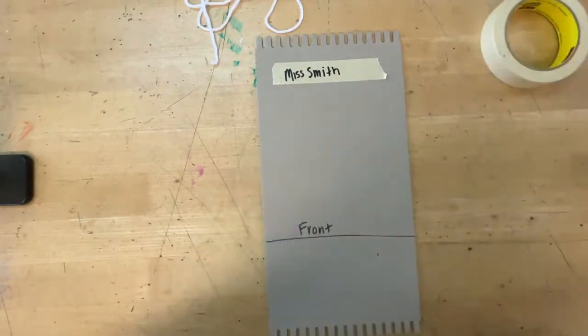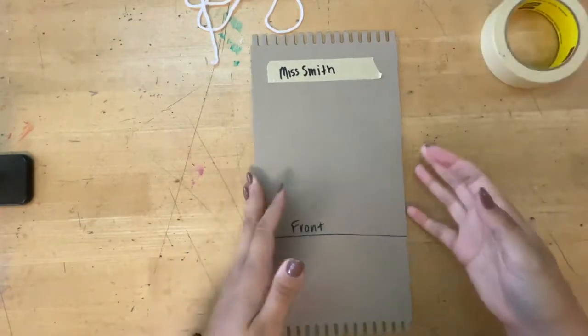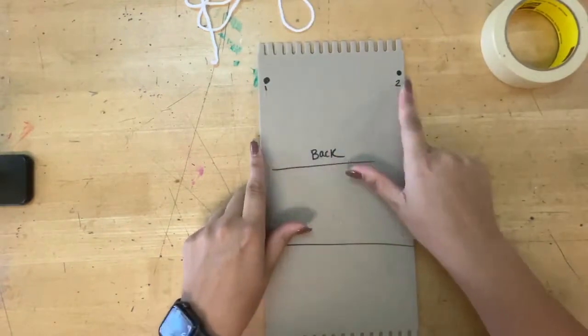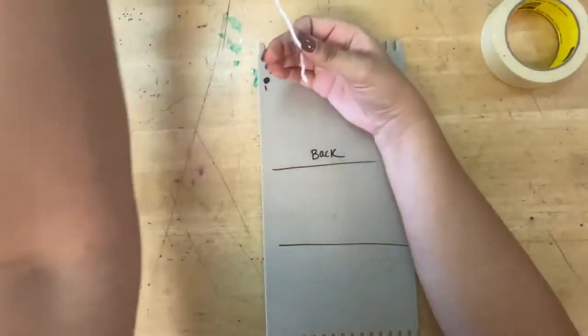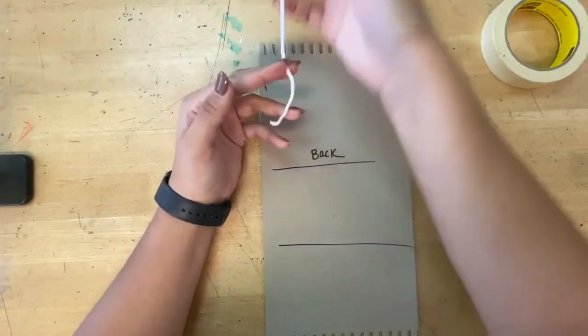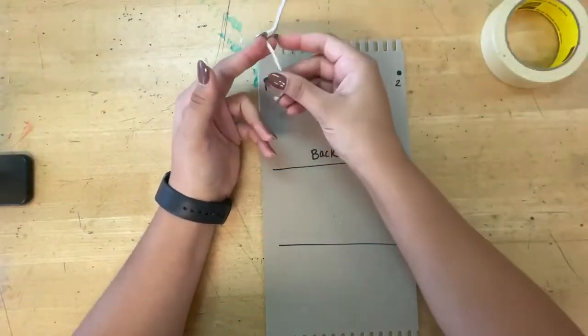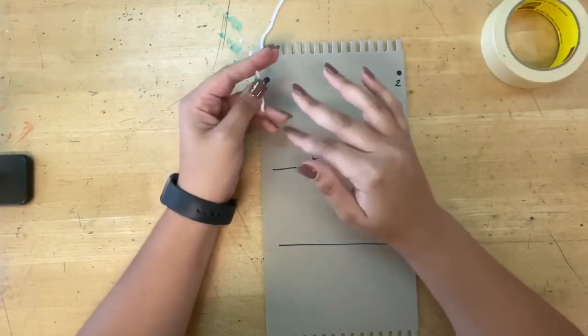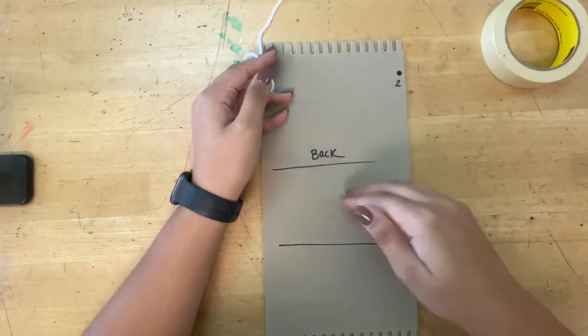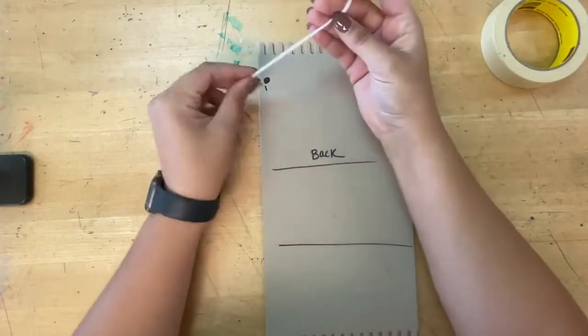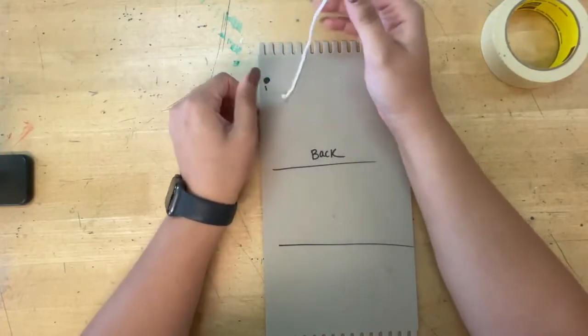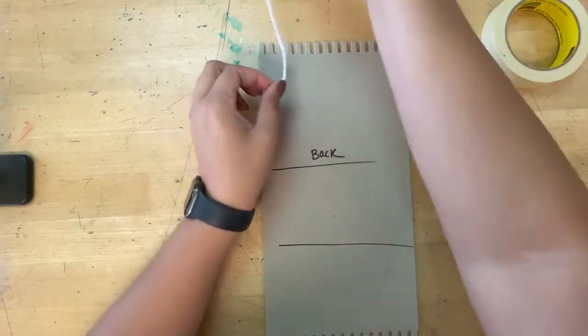To set up our first set of strings on the loom, we will need to use the dots on the back. Notice how it says one and two. These are called the warps, and the warps are the strings that go up and down that you weave into. You will not really see these strings, just on the end tassels, so keep that in mind when you pick your color. I'm going to use white.